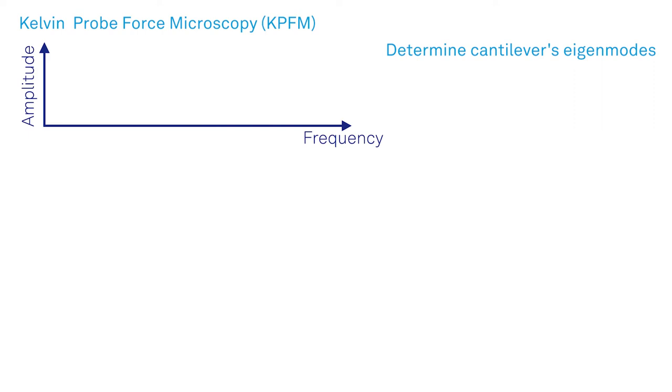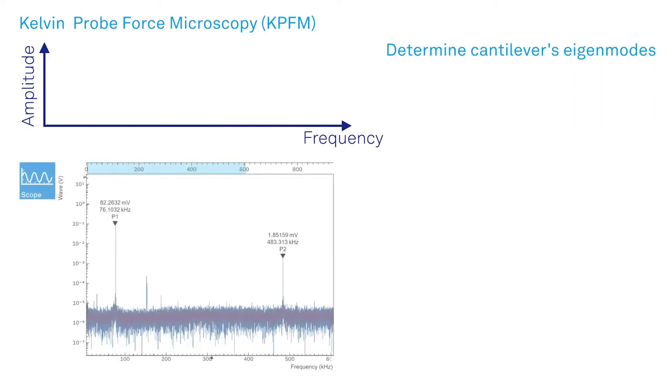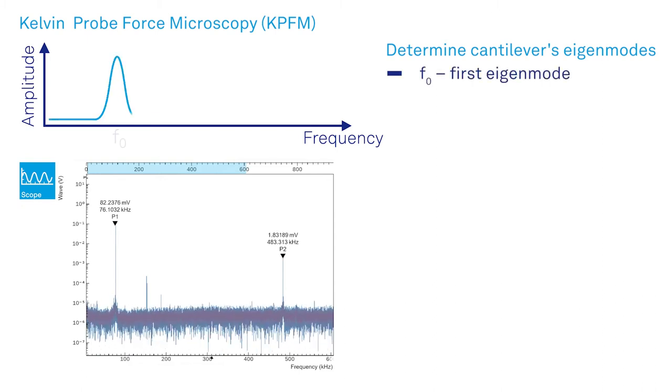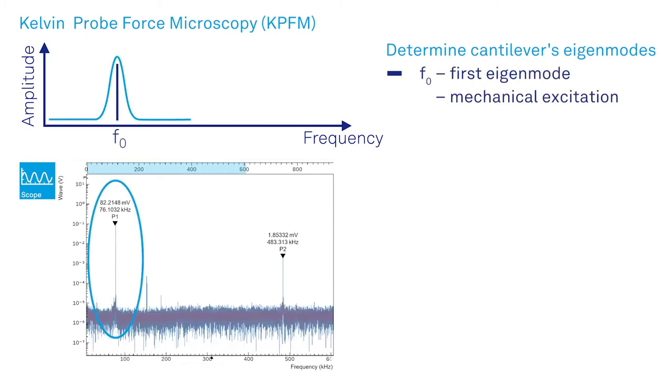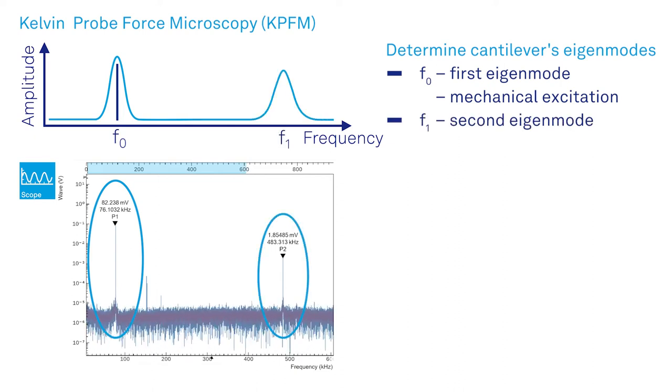We start to determine the cantilever's eigenmodes by monitoring the deflection signal in the frequency domain with the oscilloscope tool. The first eigenmode, F0, corresponds to the mechanical excitation from the AFM controller. Here we also see the second eigenmode of the cantilever, F1.